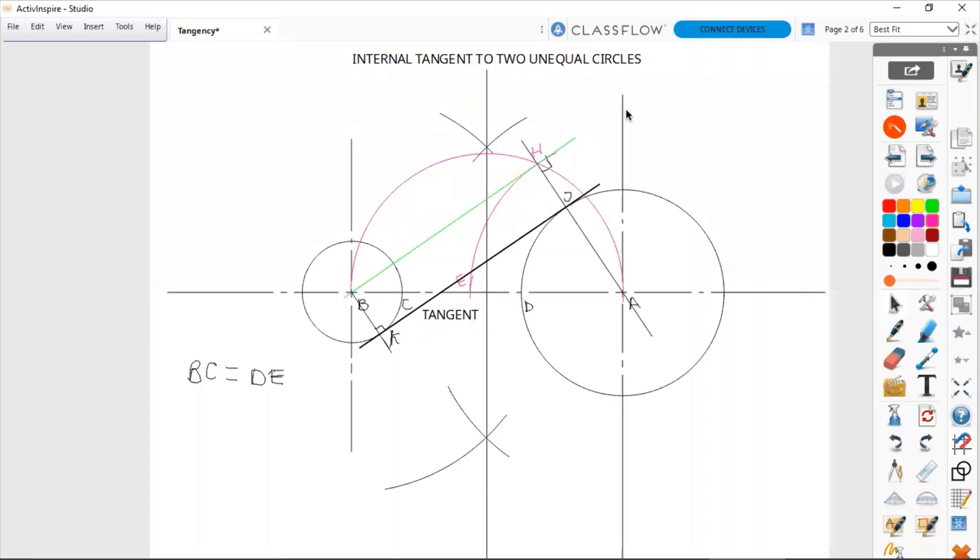That first tangent line we drew is what we have in green, to the circle with center A and radius AE.